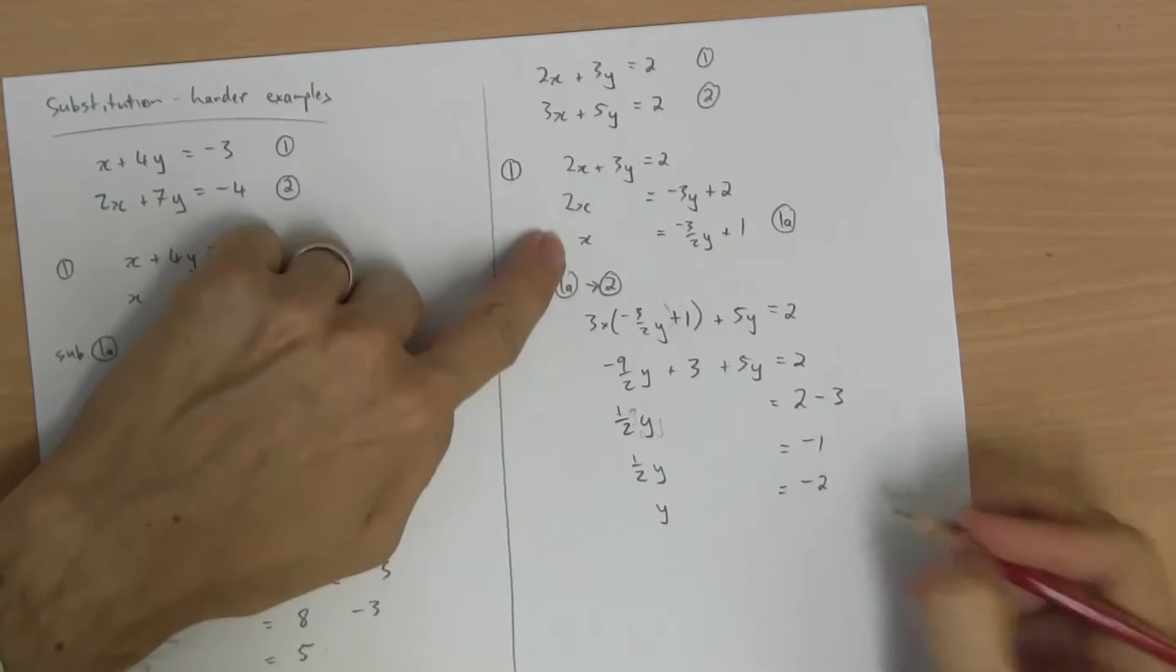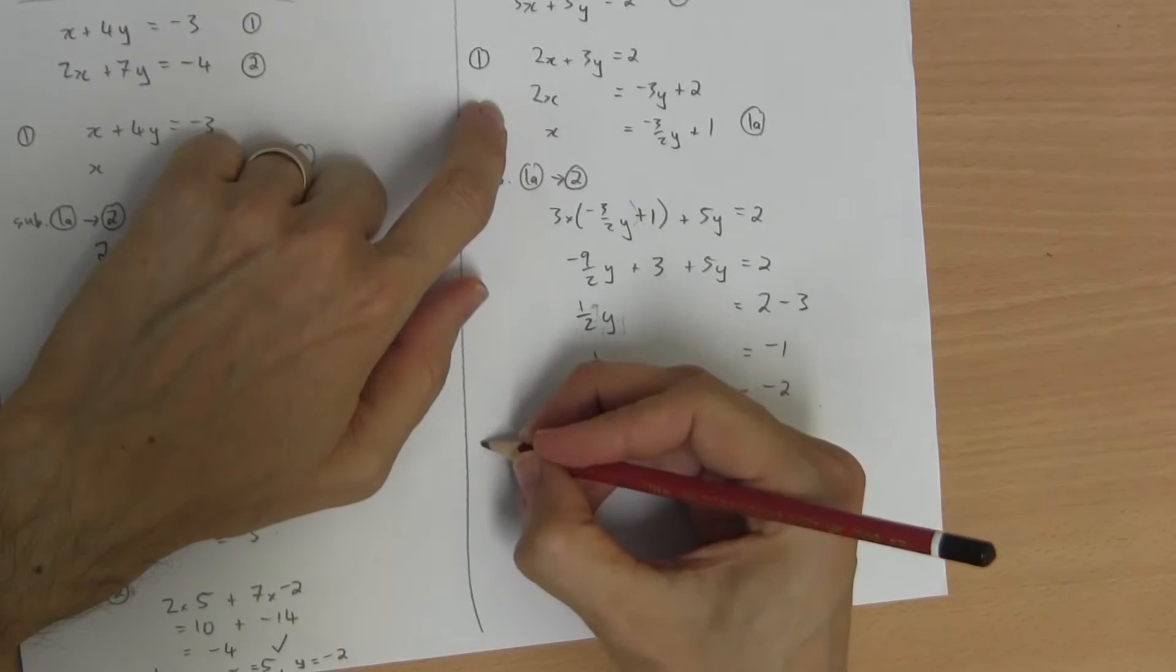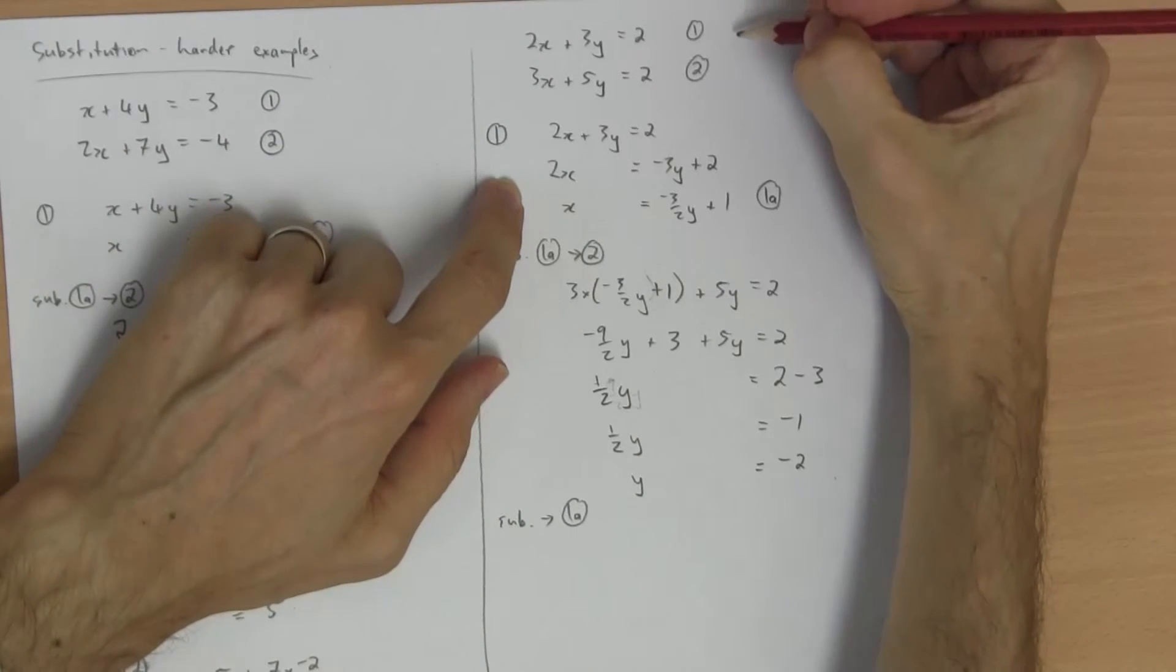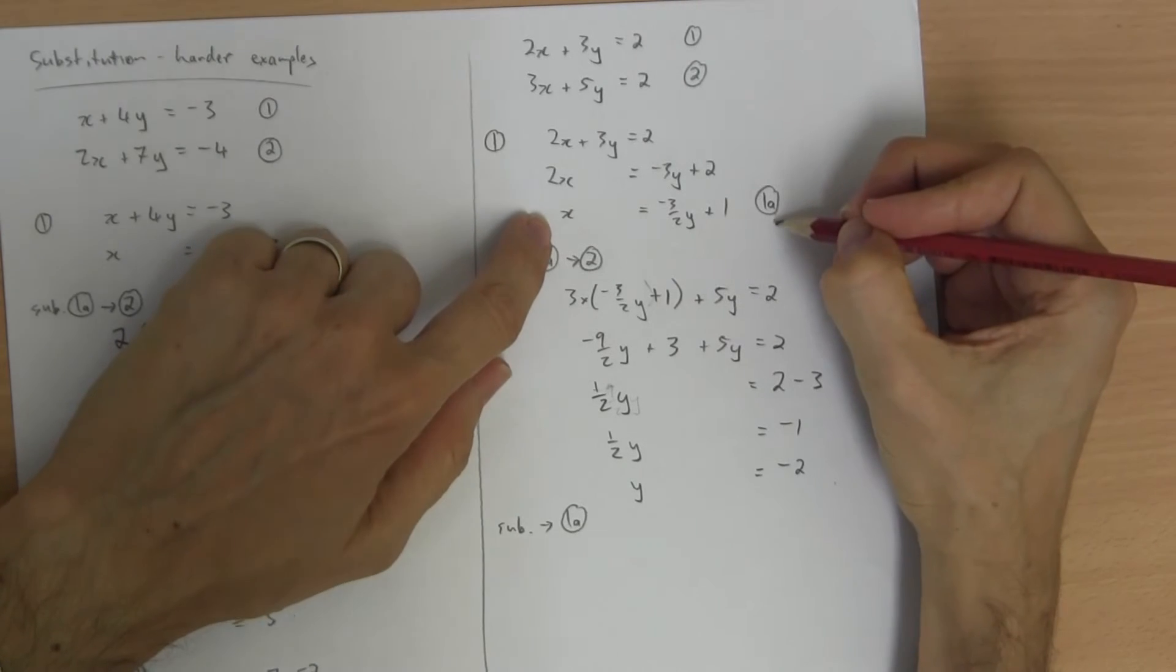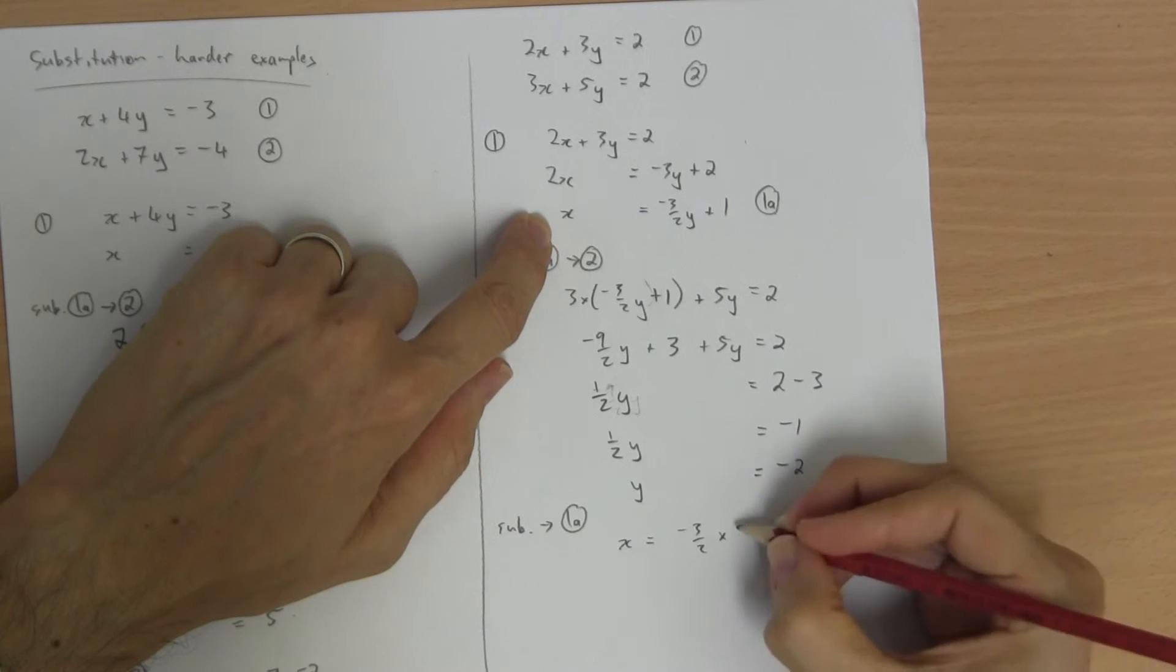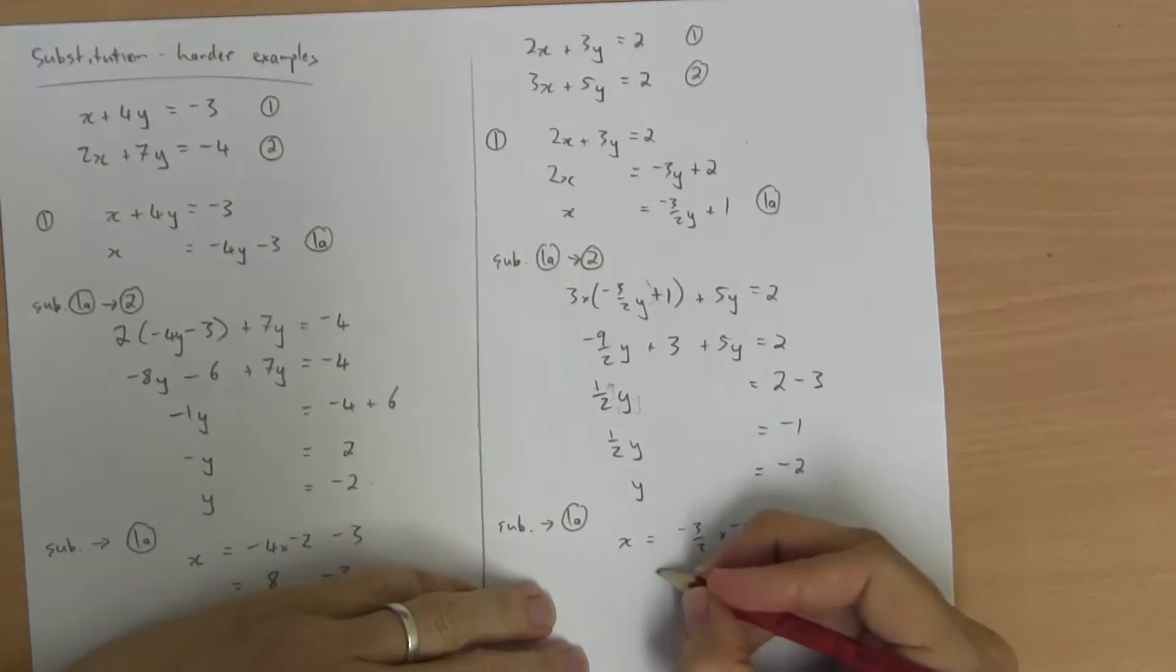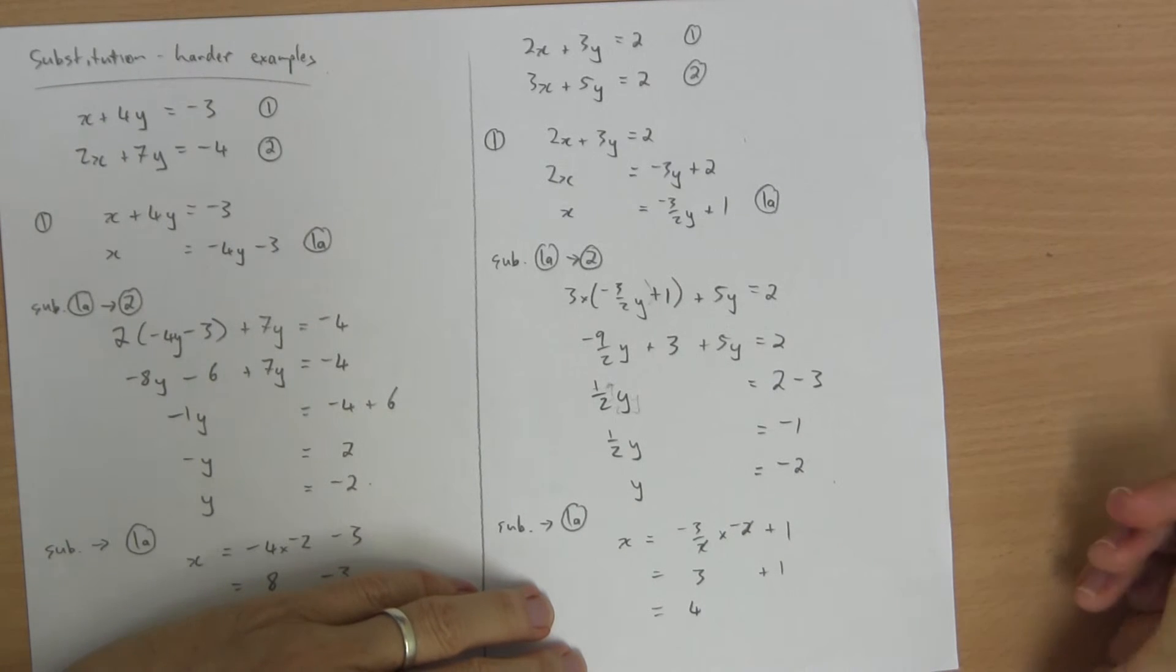If y is 2, let's get a value for x. Substitute that into 1a. Again, I could go all the way back to equation 1, but equation 1a is the same as 1, but it already says x equals. x equals negative 3 on 2 times y, negative 2, plus 1. That's positive 3 plus 1, which is 4.